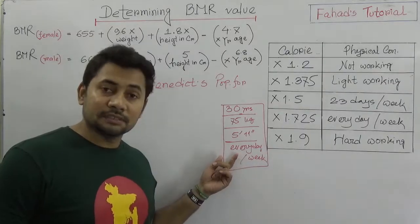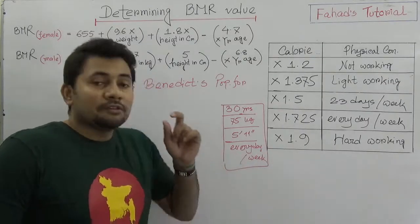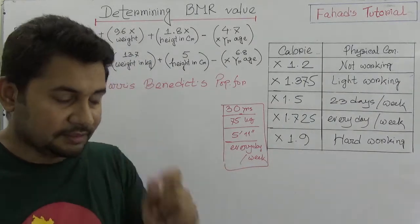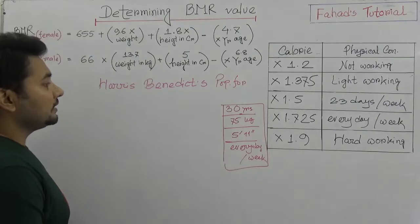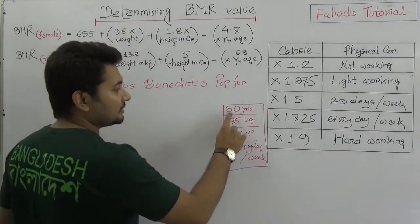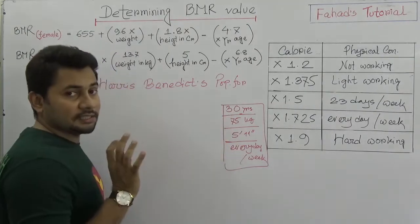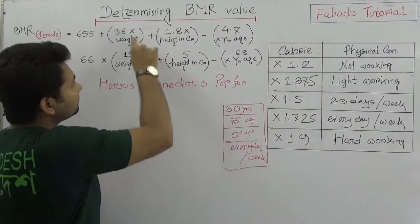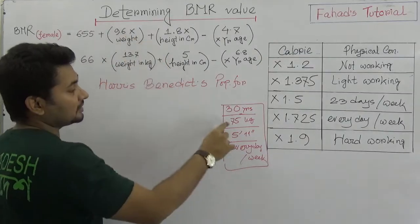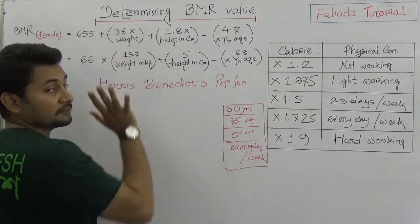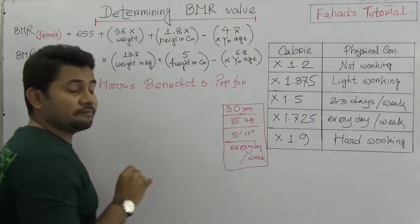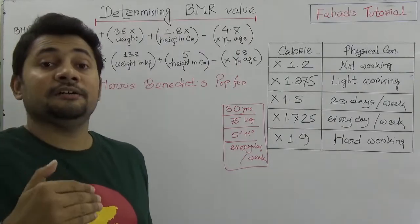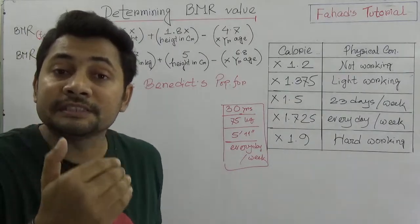So what should be the BMR? The 30 years age is unchanged, 75 kilogram we put directly, but this 5 feet 11 inches we need to convert into centimeters. That is the main point. In my previous video when I explained about BMI, I said we need to understand unit conversion.